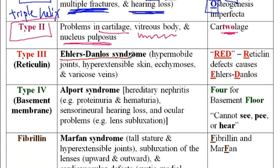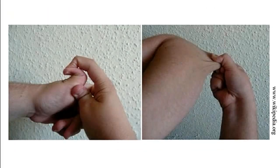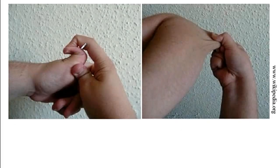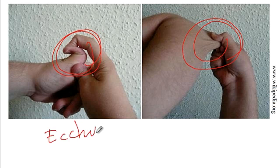The next disorder is Ehler-Danlos syndrome, which is due to a defect in collagen type 3 or reticulin. The memory aid is called RED — Reticulin is defective in Ehler-Danlos syndrome. Characteristics of this disorder include hypermobile joints, hyperextensible skin, as well as ecchymosis and varicose veins because of the problem with the vessels. Here is an image of a patient with Ehler-Danlos showing hypermobile joints, hyperextensible skin, ecchymosis, and varicose veins.